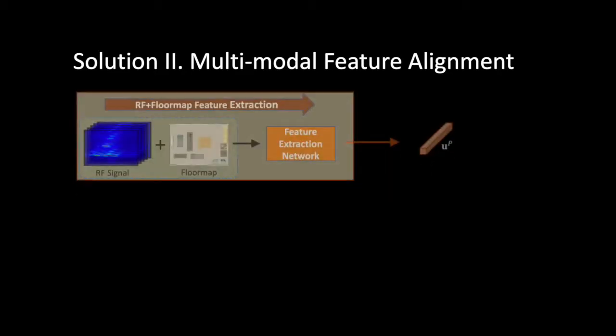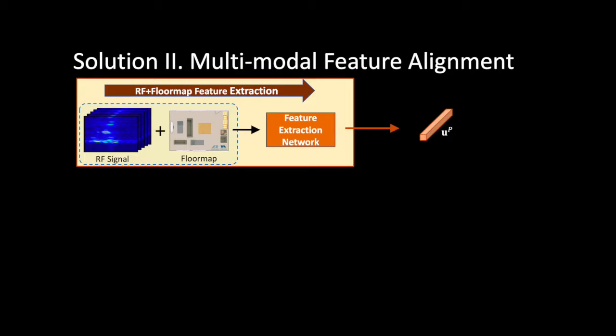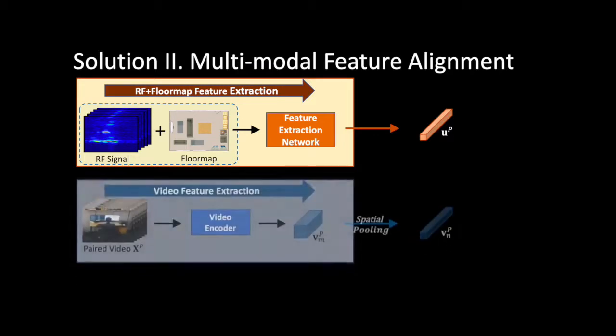Here I show how we do it. We use this multi-modal feature alignment framework to distill knowledge from existing video-based captioning datasets to our RF diary. Instead of collecting a huge RF captioning dataset, we collect a small dataset where we record both videos and RF from people performing activities at home at the same time. We first extract features from RF signals and floor maps.